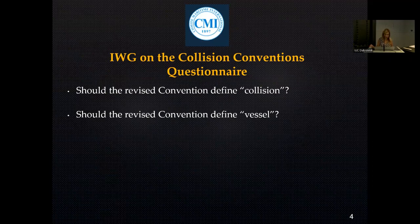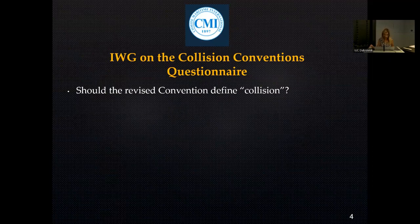So another question is: should the revised convention define vessel? And if so, should the definition include all floating structures? In my opinion, as well as the opinion of most colleagues from the Croatian Maritime Law Association, the convention should define vessel, and the term should mean any seagoing and inland waterway vessel of any type, including hydrofoil boats, air-cushion vehicles, submersibles, and floating platforms, except when such platforms are on location engaged in exploration, exploitation, or production of seabed mineral resources.